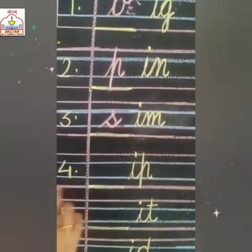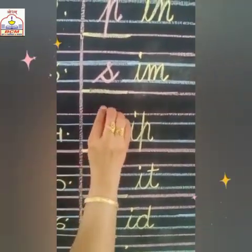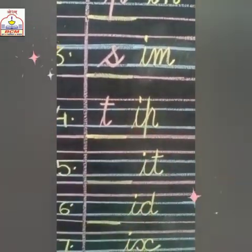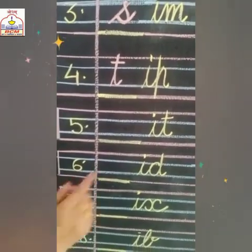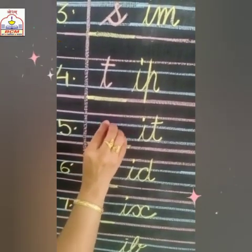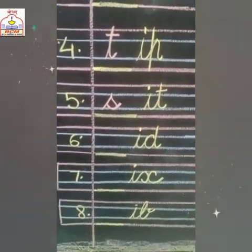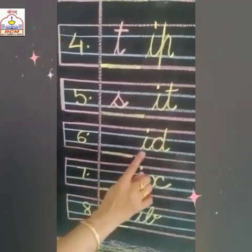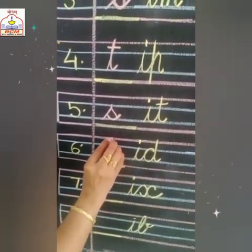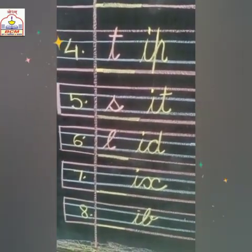Number 4 is I-P, ip. I will write here T — T-I-P, tip. Number 5 is I-T, it. To make it meaningful we will write here S — S-I-T, sit. Number 6 is I-D, id. To make it meaningful we will write here L — L-I-D, lid.